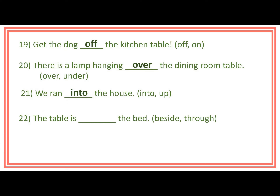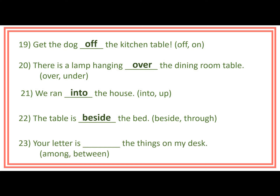Number 22: The table is ___ the bed. Prepositions inside the bracket are beside and through. Answer: The table is beside the bed. Number 23: Your letter is ___ the things on my desk. Prepositions inside the bracket are among and between. Answer: Your letter is among the things on my desk.